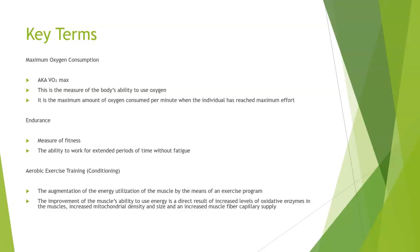VO2 max is the measure of the body's ability to use oxygen, measured on a numeric scale. The higher the number, the more efficiently you use oxygen. We can look at it as the maximum amount of oxygen consumed per minute when the individual has reached maximum effort. The higher the number, the more in shape someone is said to be; the lower the number, the more out of shape. This is something outside our scope, but it can be measured to get a sense of where someone's at.